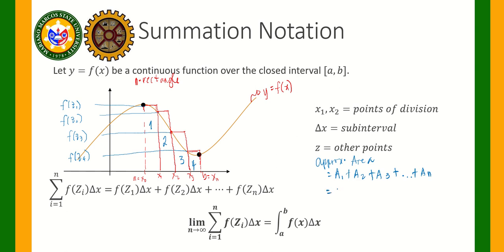The area of rectangle 1 is equal to length times width. The width is x sub 1 minus x sub 0, which we call delta x — the change in the values of x. Since all rectangles have equal width, each one has width delta x.